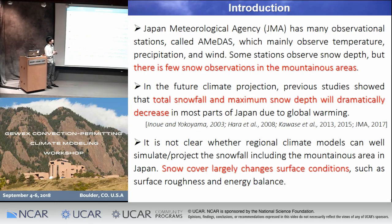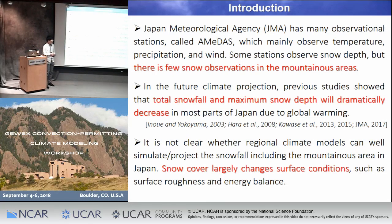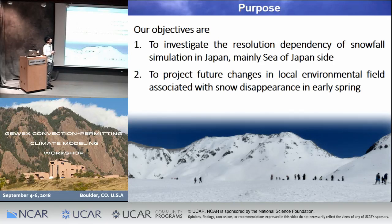We now have many future projections. Previous studies show that total snowfall and maximum snow depths will dramatically decrease in most parts of Japan, similar to other countries, due to global warming. But it is not clear where the regional climate model can well simulate or project snowfall, including in mountainous areas — it may depend on resolution. Snow cover also largely changes the surface condition. Our objectives are to investigate the resolution dependency of snowfall simulation in Japan, mainly on the Sea of Japan side, and to project future changes in the local environment associated with snow disappearance in spring.